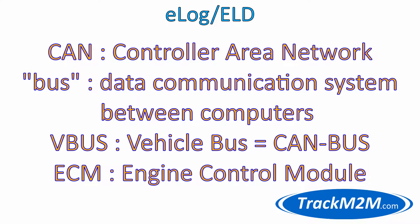CAN: Controller Area Network. This is a network of small controller computers. BUS: Short for Omnibus, this term refers to data communication systems that transfer data between computers or components within a computer.